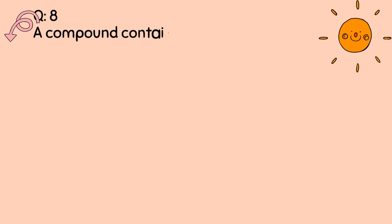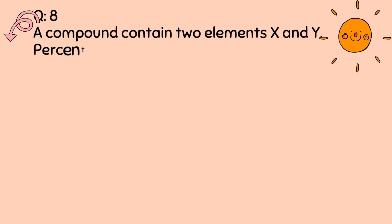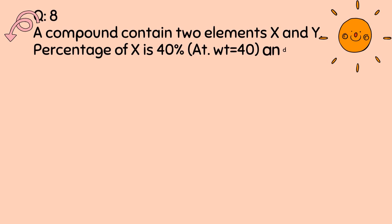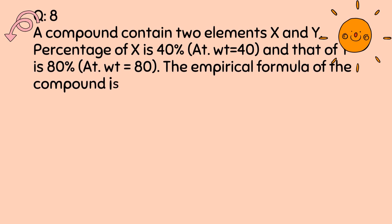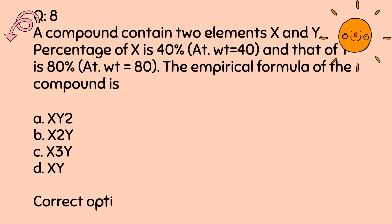Question number 8. A compound contains two elements X and Y. Percentage of X is 40% and that of Y is 80%. The empirical formula of the compound is: A. XY₂. B. X₂Y. C. X₃Y. D. XY. Correct option is A.